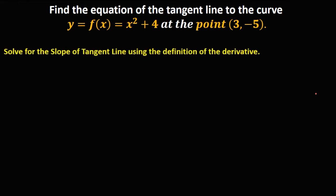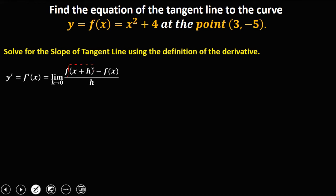First, we need to find or solve the slope of a tangent line using the definition of the derivative. This is the formula for solving the derivative using the limit definition. Observe that in the numerator there are two terms. The first term is f of x plus h, so therefore your x is equal to x plus h.